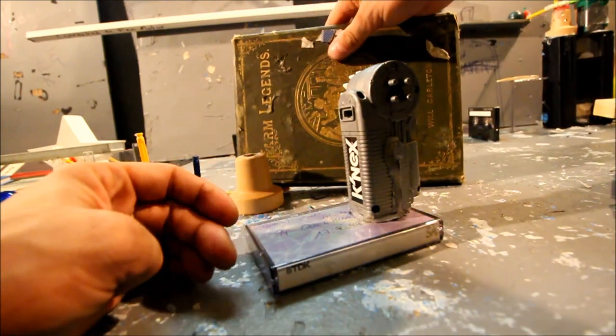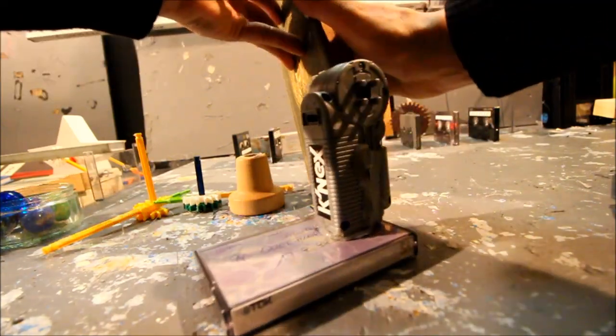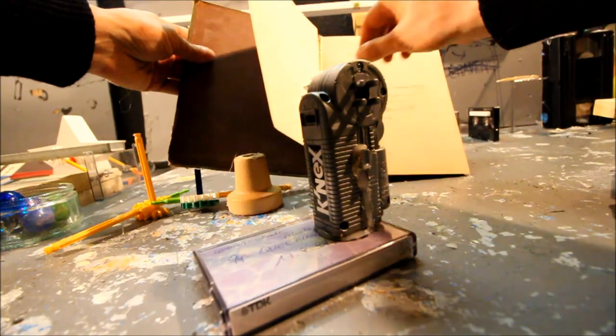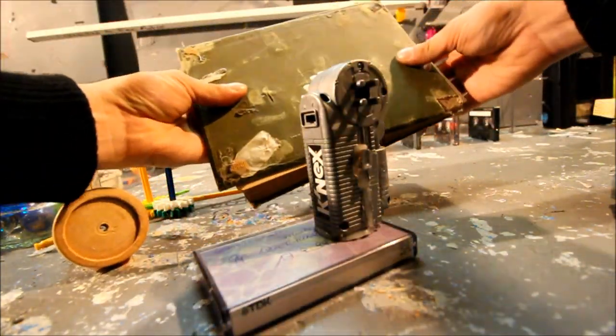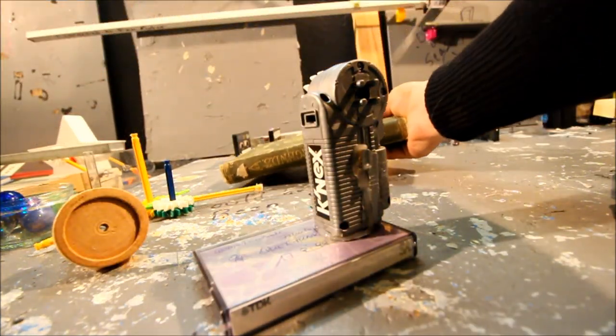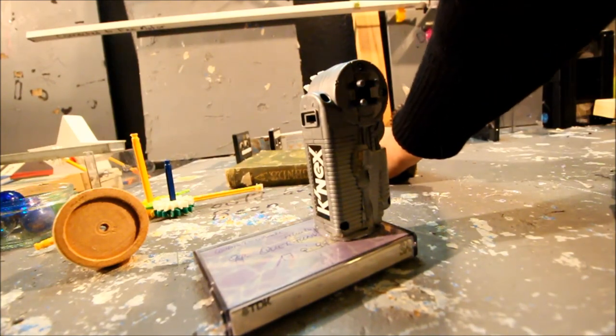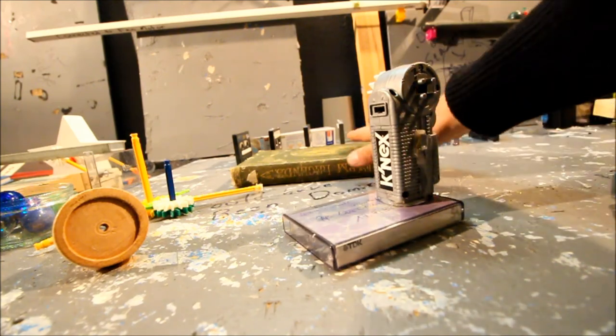While we let that dry, I'd like to mention the book Farm Legends. It's from 1892 and it has hot glue all over it. It's been in a lot of videos. I like having things in my machines that show up many times used in different ways. I think it makes it more like a storyline.